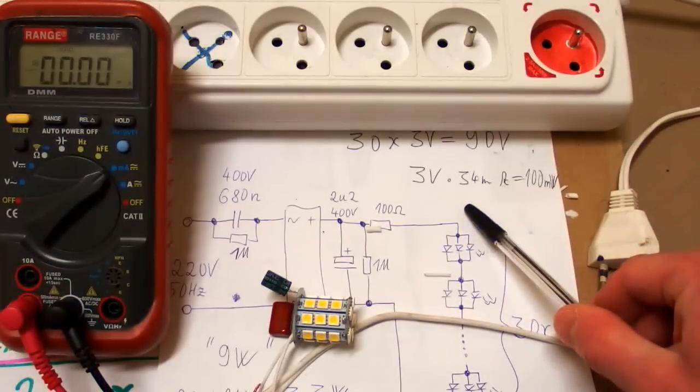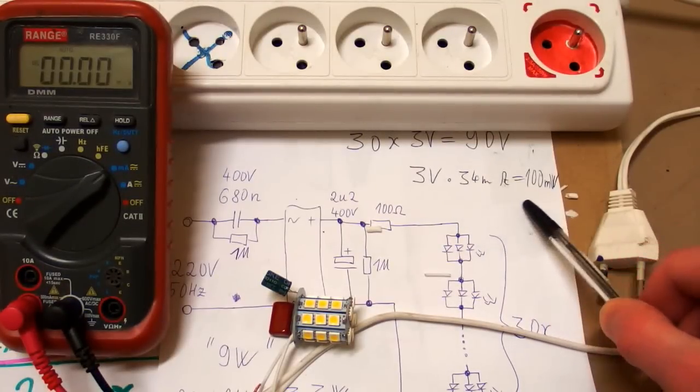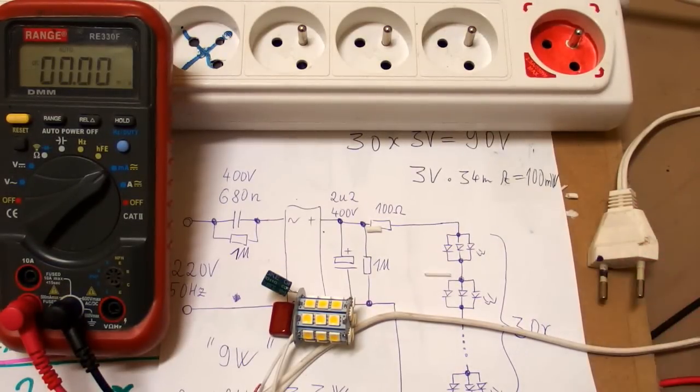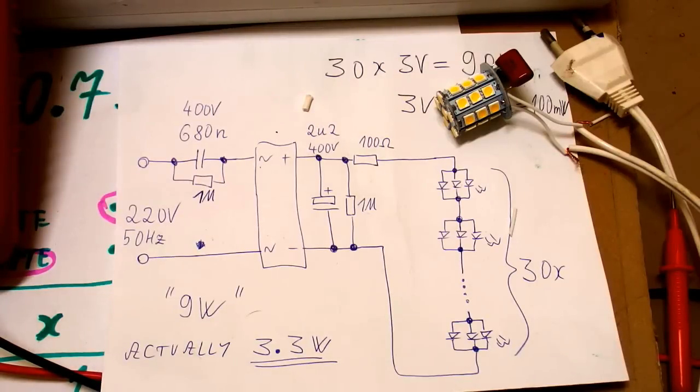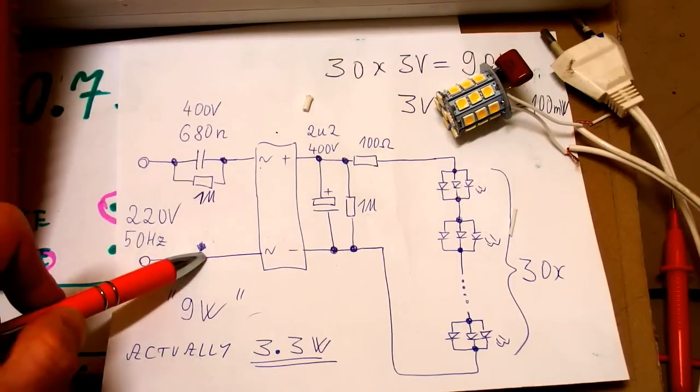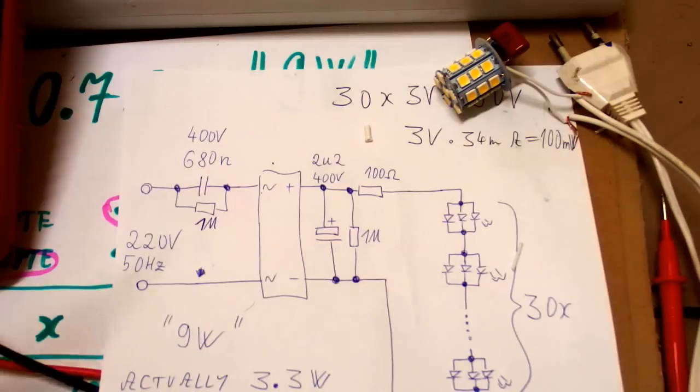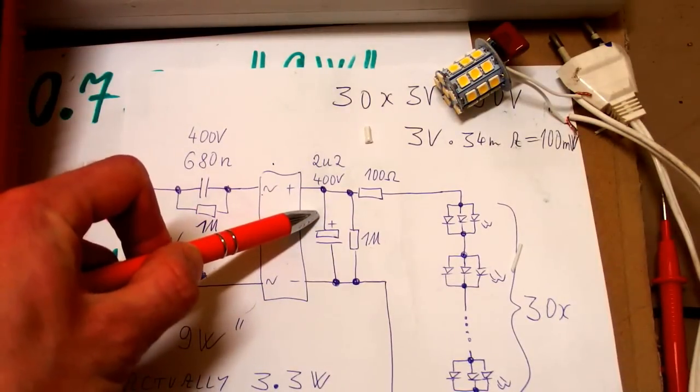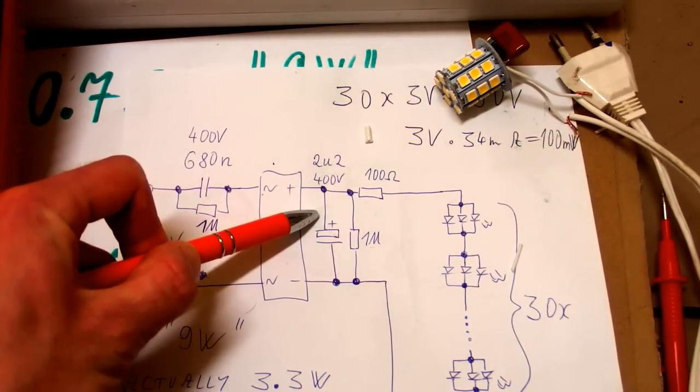So at about 3 volts and 34 milliamps the power of one package is about 100 milliwatts. The design is not so bad but for safety reasons I would like to have a fuse or fusible resistor here. And also this filter capacitor could have a higher value so that it doesn't flicker so much.